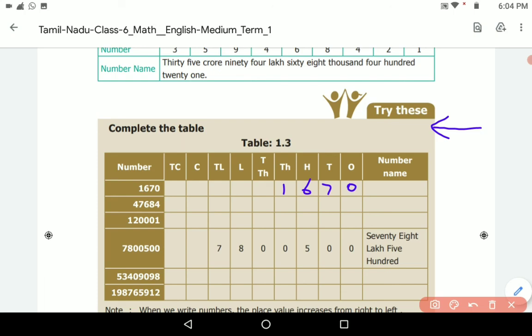So what will be the number name? The number name will be 1670. Here the number is 47684. What is the number name? 47,684.